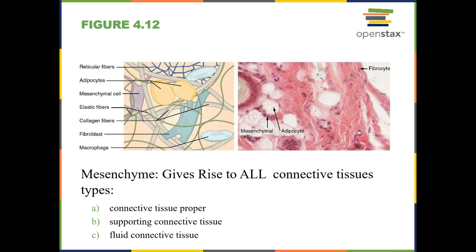We also have white blood cells, like macrophages, that are found throughout connective tissue. Macrophages are the protector cells of our bodies. They are white blood cells that can phagocytize materials that are not supposed to be there. They're found in almost every single one of our organ systems, and they're also found in the connective tissues that make up different organs, which is why we find them across all these organ systems.